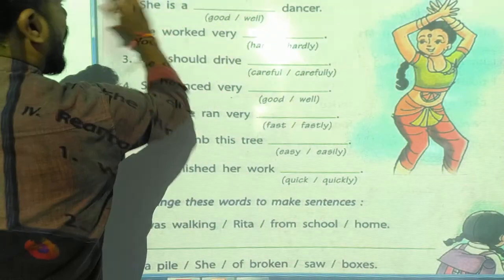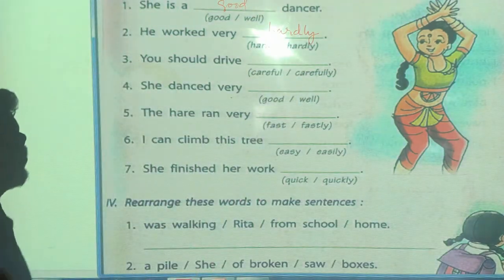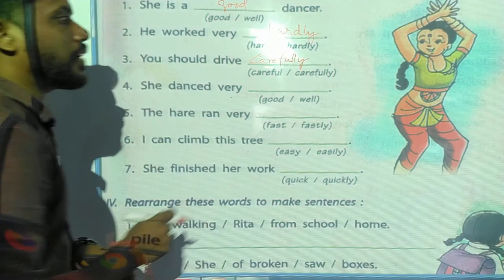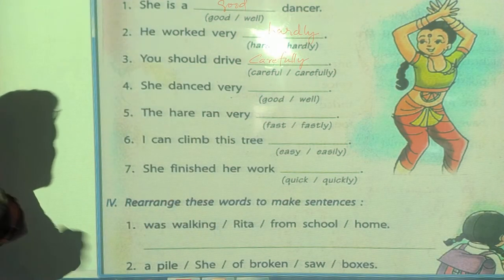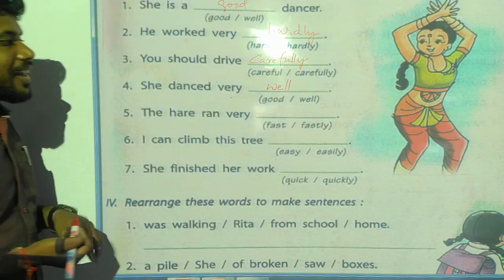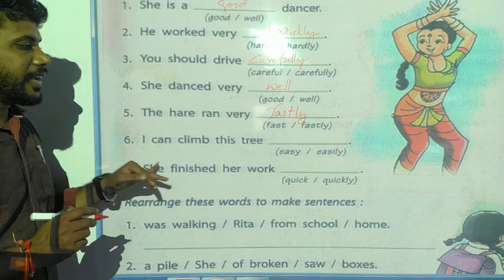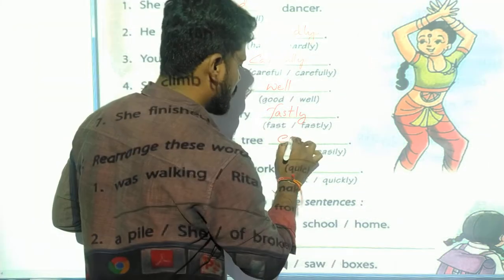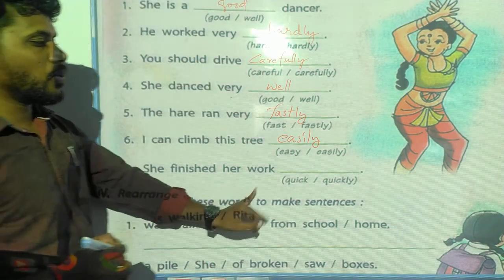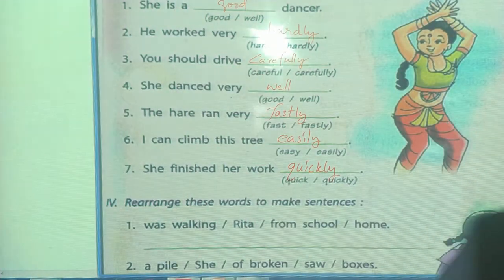And: 'He was very hardworking.' You should drive carefully. She dances very well. The hare ran away very fast. I can climb this tree easily. She finished her work quickly.